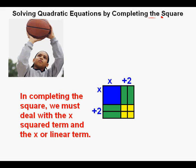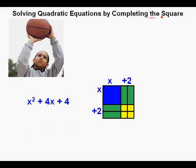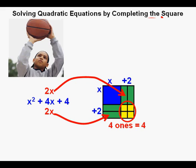In completing the square, the things we need to deal with are the x squared term and the x, or linear, term. The x term that forms this perfect square is 4x. We put two x's in the upper right of the square and the other two x's of the 4x's in the lower left of the square. We need to adjust the left side of the equation to fill in the square created by these x squared and x terms — in this case, 4, represented by the four little yellow squares in the lower right of the diagram.